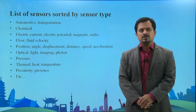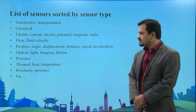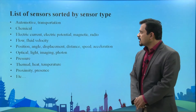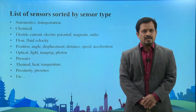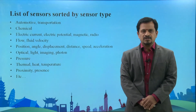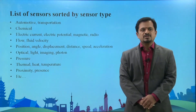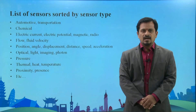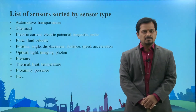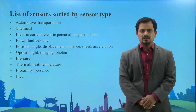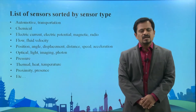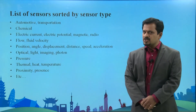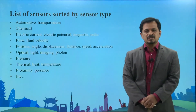What kind of sensors are going to be used in the IoT world? If you look at here: automotive, transportation, chemical, electric current, electric potential, magnetic, radio flow sensors, position, speed, accuracy, displacement sensors, optical, light, imaging, photon sensors, pressure sensors, thermal, heat and temperature, and at last the proximity sensors.